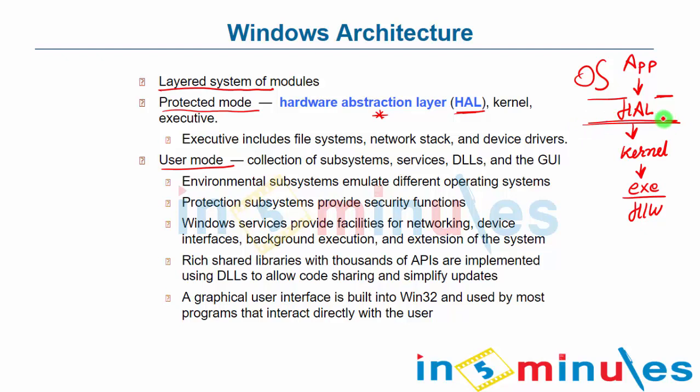So that is the system called protected mode, which deals with keeping applications and the OS away from low-level unnecessary details, giving platform independence, portability, and faster processing — because the hardware abstraction layer mainly takes care of using lower-level hardware in the best possible manner. So in protected mode, we have three things: the hardware abstraction layer, the kernel, and the executive. Now, what exactly is user mode? It is more about adding modules and applications.